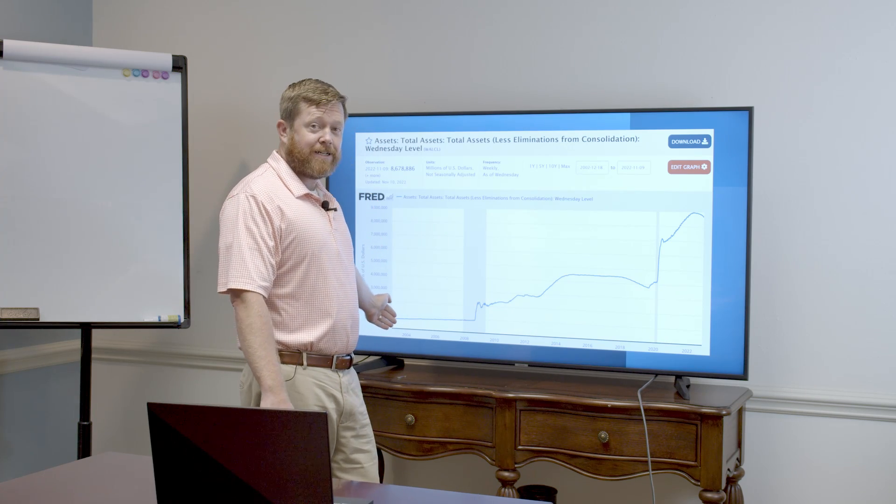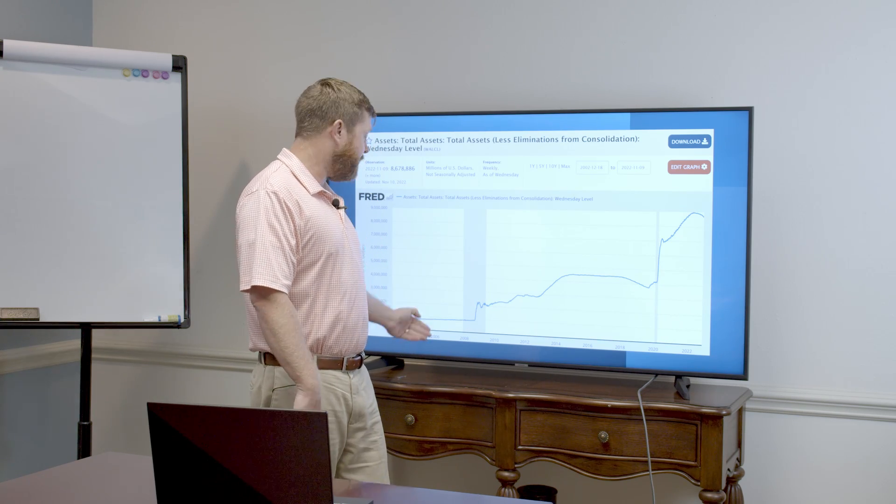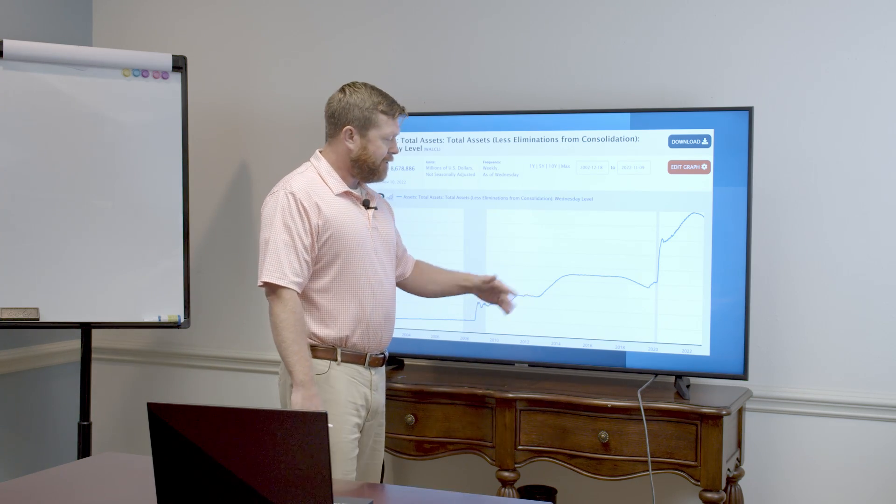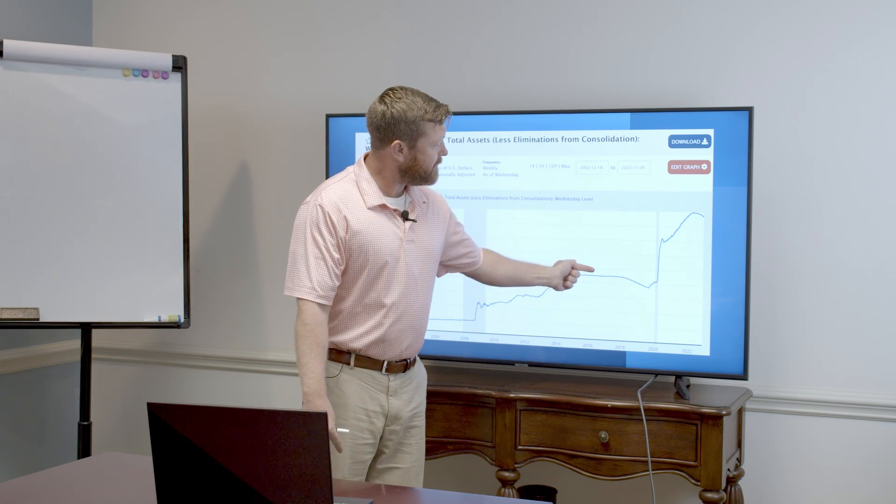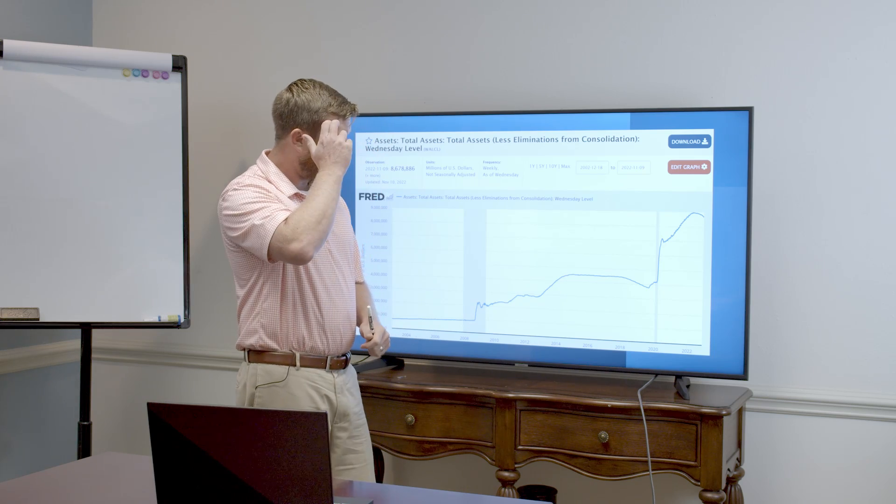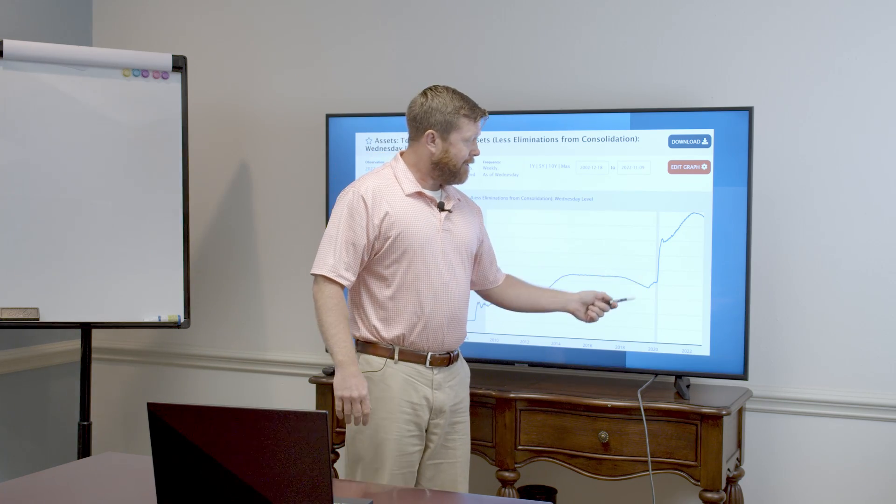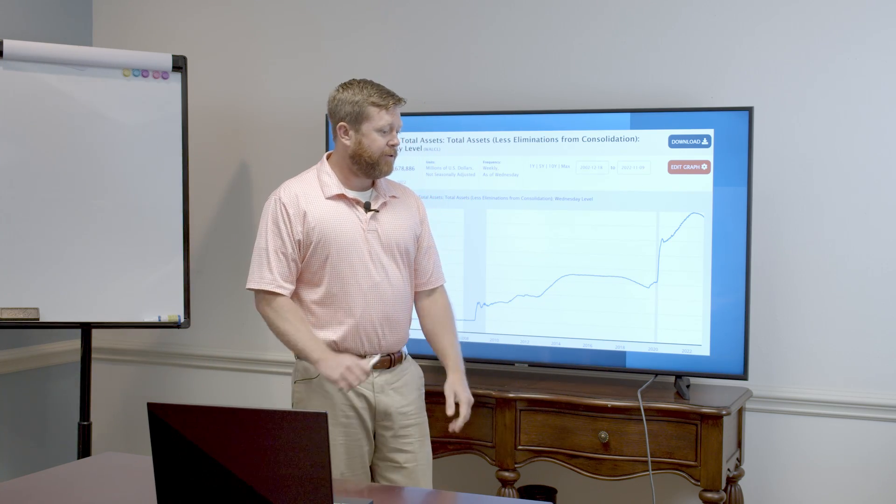We had low interest rates from Greenspan panicking after 9-11. And now we have all this extra money creation that was parked on the Fed balance sheet that we were starting to sell back out into the world. Until we had to shut down and spend our way with fake money.